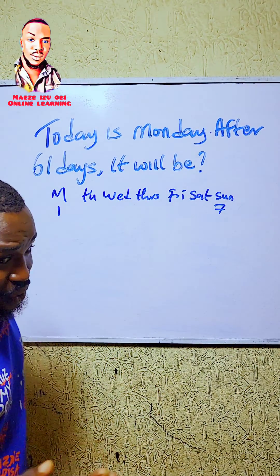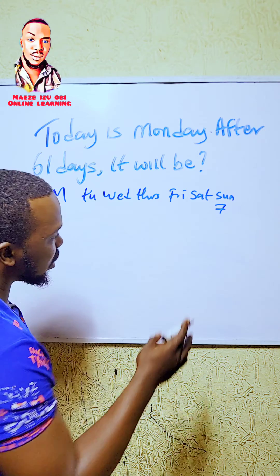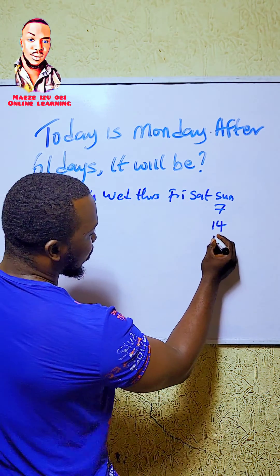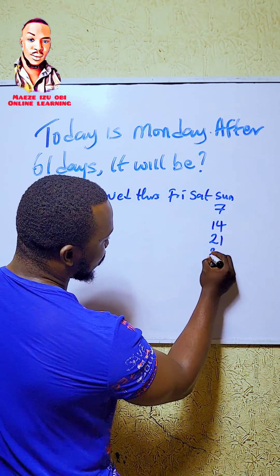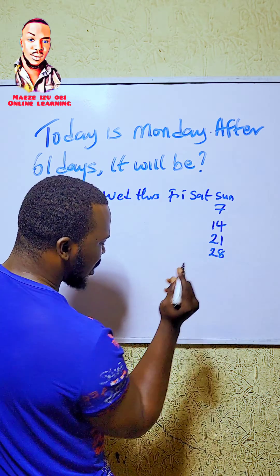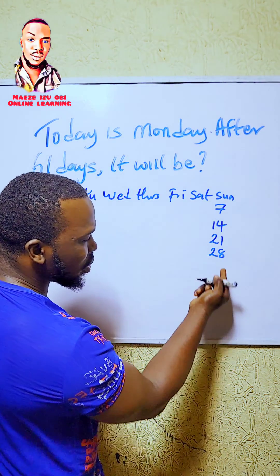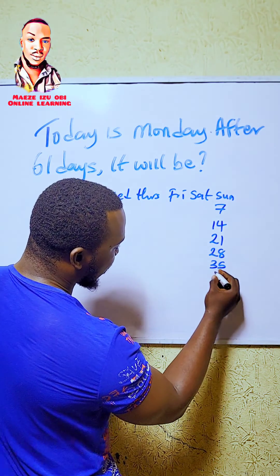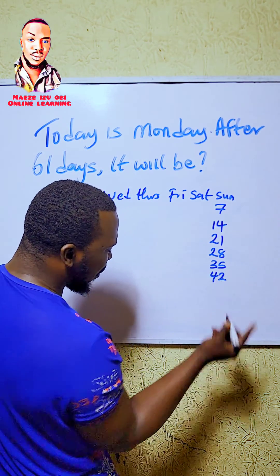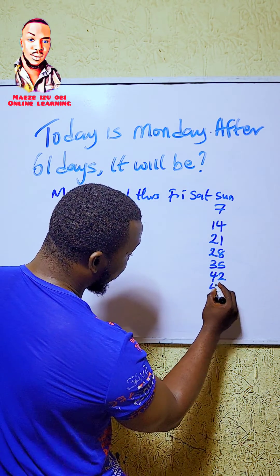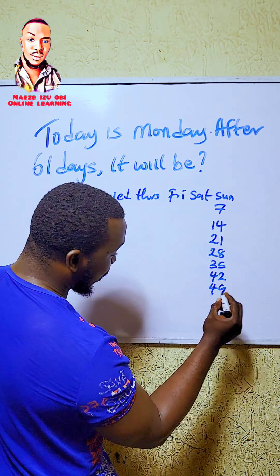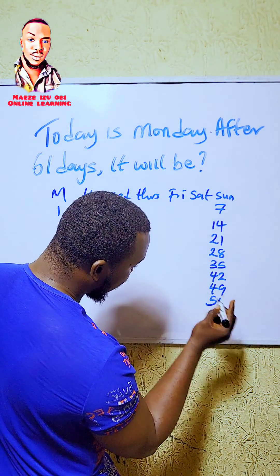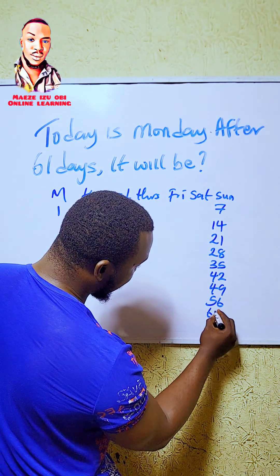So, the reason you should do your multiplication timetable — 7, 14, 21, 28. Go with me. After 28, you add another 7, it's going to give you 35. After 35, it gives you 42. After 42, it's going to give you 49. After 49, it's going to give you 56. After 56, it's going to give you 63.